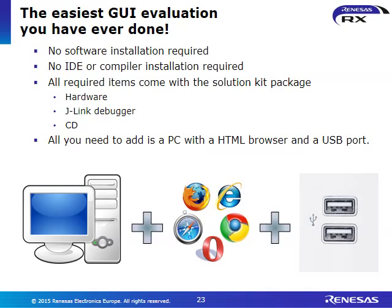For this GUI evaluation, you do not have to install any software or IDEs or compiler. The only things you need to provide are a PC, a browser, and a USB port. Everything else required for evaluation comes in the display solution kit package: the hardware itself, the TFT and RX microcontroller, a J-Link debugger, and a CD with all the content.